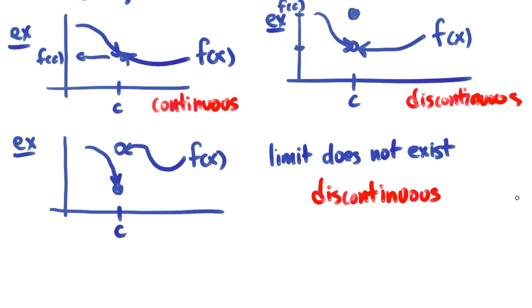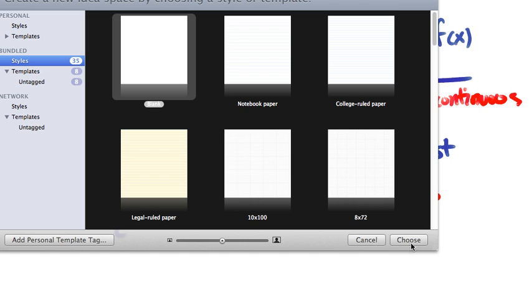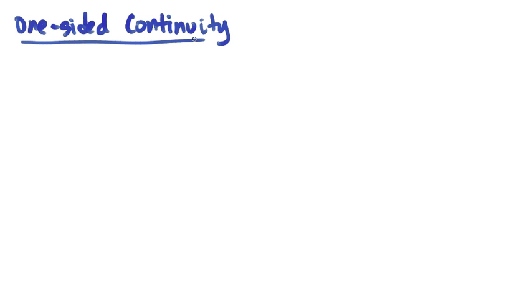We can also have a special kind of continuity called a one-sided continuity. So let's take a look at that. A one-sided continuous function has left, it's called left continuous,